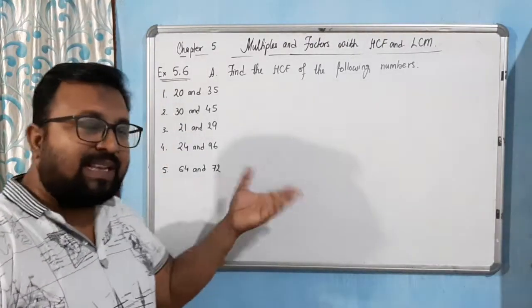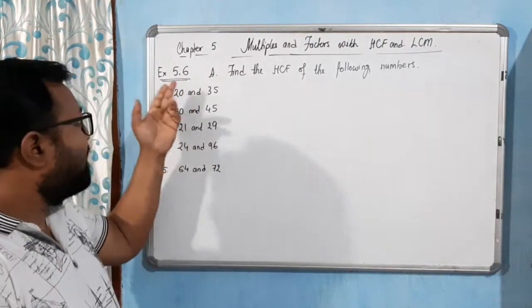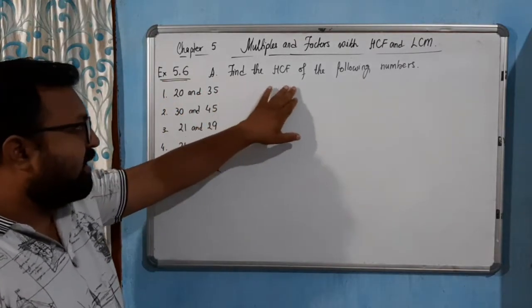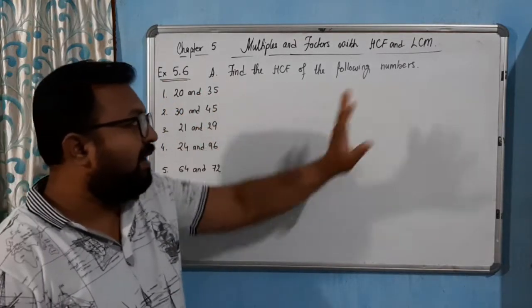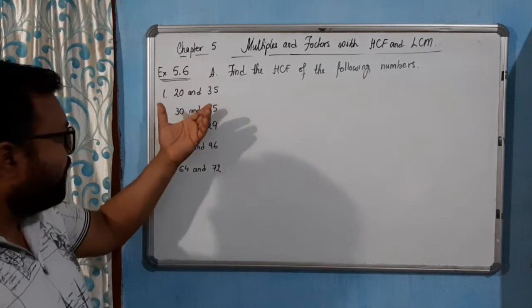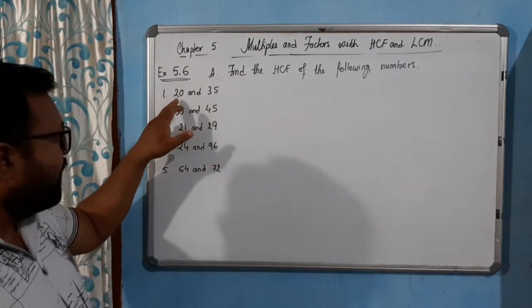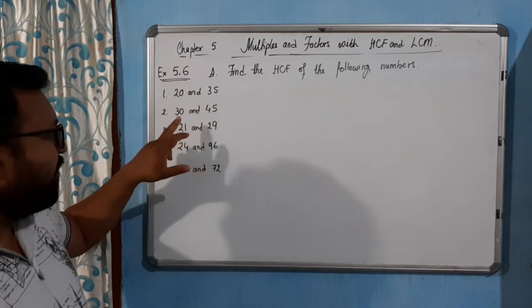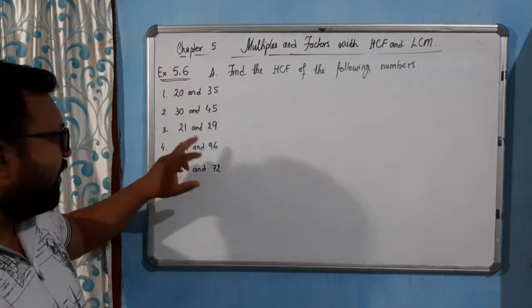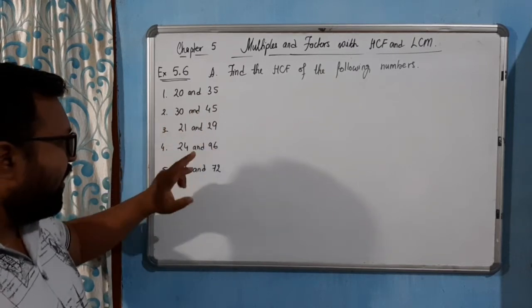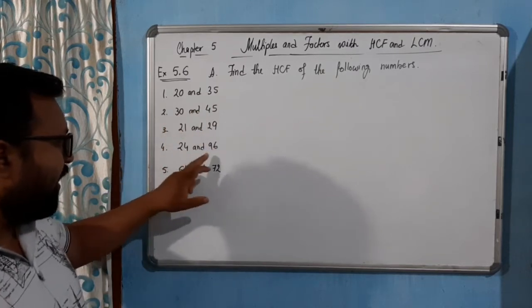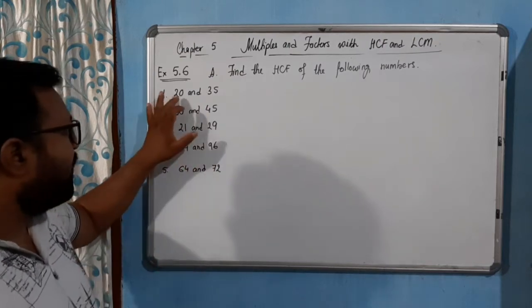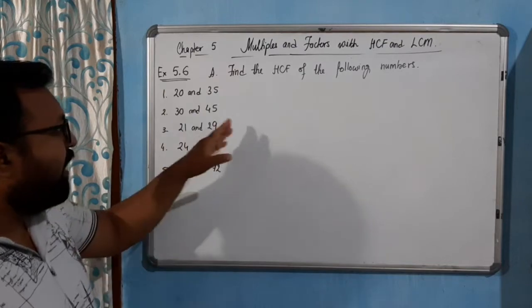Hello students. Now we come to the next exercise 5.6. The first question says find the HCF of the following numbers. I have written some numbers here. First we will do 20 and 35, then we will find the HCF of 30 and 45, then 21 and 29, then 24 and 96, and lastly we will do 64 and 72.